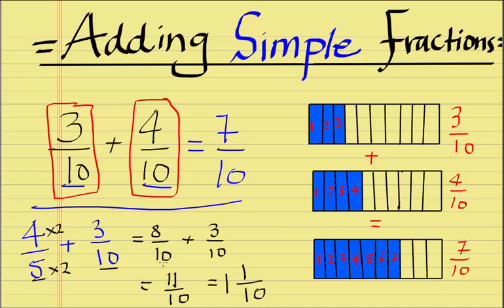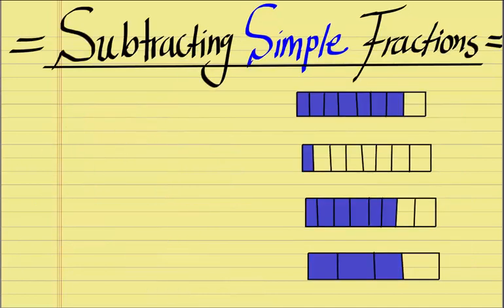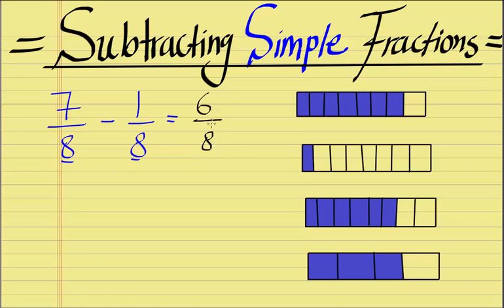Now let's take a look at how we subtract simple fractions. So subtracting simple fractions is quite simple. Same rules apply if you have fractions that have the same denominator. Say if we for example had 7 over 8 minus 1 over 8. Because they have the same denominators, 8 and 8, what we can do is we can simply subtract the numerators 7 and 1. So 7 minus 1 is 6, and then we keep our original denominator 8. And we get our final answer, 6 over 8. But wait.